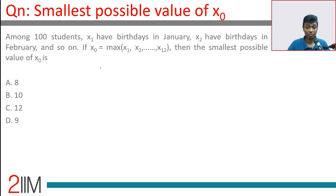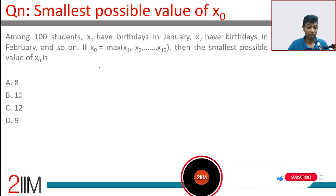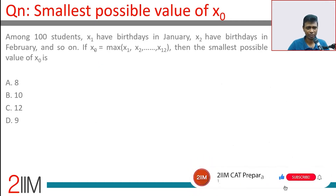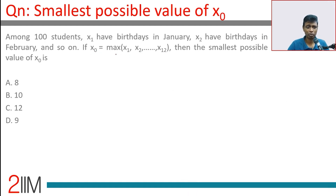Among 100 students, x1 have birthdays in January, x2 have birthdays in February, and so on. x0 is equal to the maximum of x1, x2, x3 through x12. What is the smallest possible value of x0?